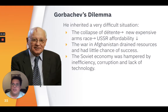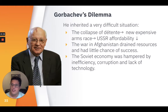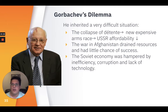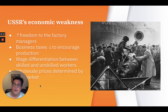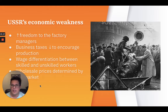Gorbachev realized that the ultimate survival of the USSR depended on ending the Cold War and reforming the economy. He inherited a very difficult situation. The collapse of détente in the late 1970s between the U.S. and USSR led to a new and expensive arms race which the USSR could not financially afford. The war in Afghanistan drained resources and had little chance of success. The Soviet economy was hampered by inefficiency, corruption, and a lack of technology. It was the economic weaknesses of both the USSR and Comecon that was a key factor in the collapse of communism and the disintegration of the USSR by 1991. Rapid industrialization had happened in the 1960s, but the Soviet command economy had become very bureaucratic and inflexible.